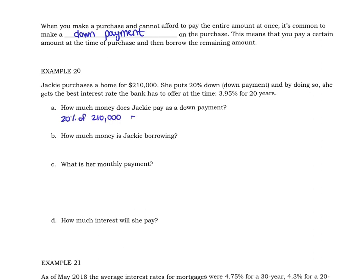We need to find 20 percent of the amount she's borrowing, that $210,000. So 20 percent of $210,000 is $42,000 that she's paying up front. Then she's going to borrow the remainder of the money. The house costs $210,000 and she's paid $42,000 right away, so she's going to borrow $168,000.